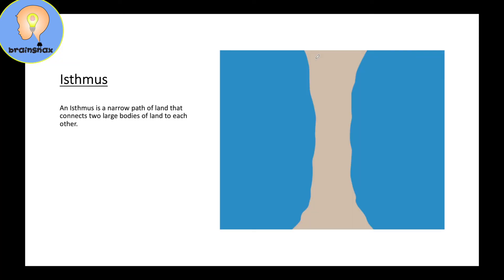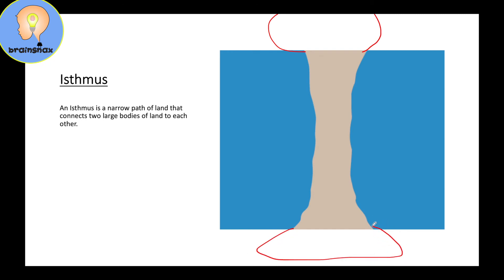And an isthmus, which is basically the opposite of a strait. Instead of having water in the middle, we have land in the middle and water on both sides. Up here there will be a big piece of land, and down here there will be a big piece of land. A good example of an isthmus is in between North America and South America, connecting them — there is a very big isthmus there.